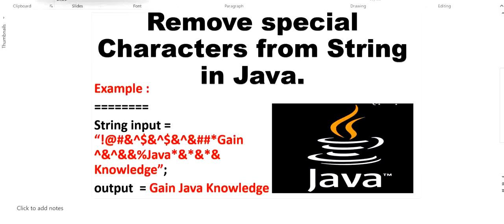Today we are going to learn how to remove special characters from a string in Java. Our input string will contain multiple special characters. We want to remove all special characters and keep only alphanumeric values — essentially removing all junk values from the string. Let's start writing the code.